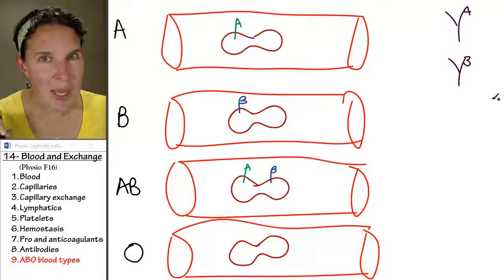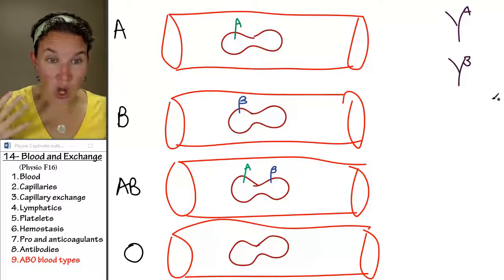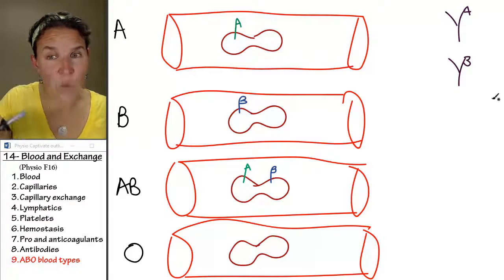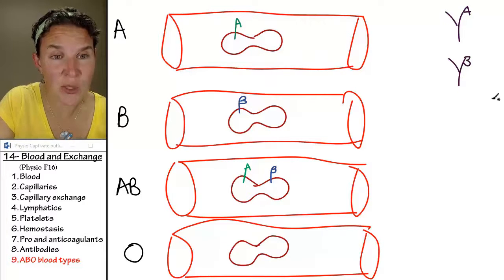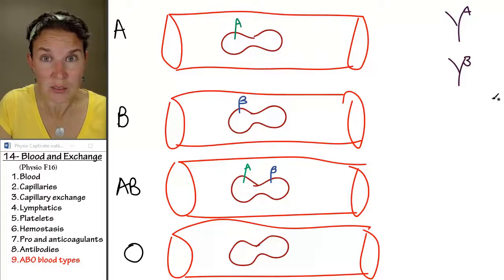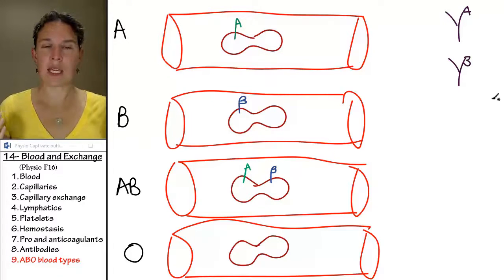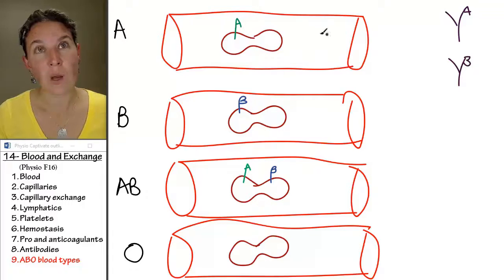So, if you have type A blood and you have A antigens all over your red blood cells, do you want type A antibodies in there to attack those A antigens? No, because your blood will clot into mashed potato land, which is a sad story. So yeah, that's a horrible idea. No.